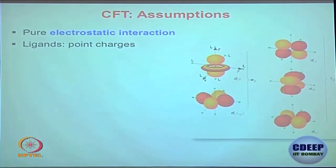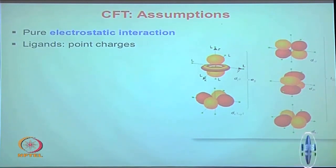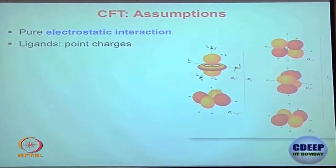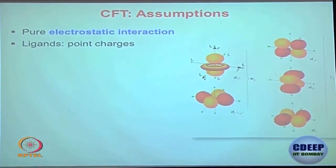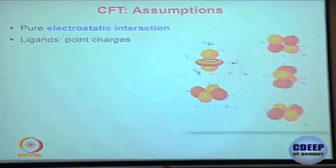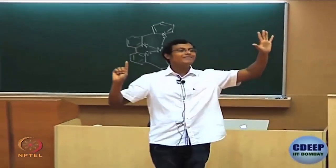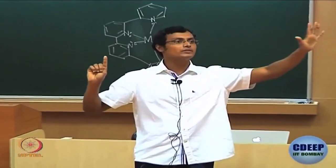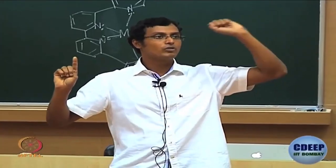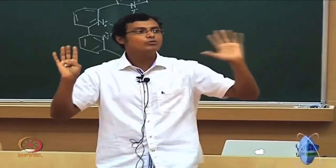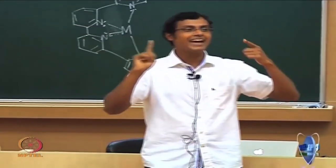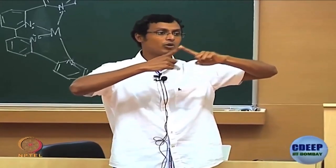Now in crystal field theory, first we have to look at the orbitals. This is something you have to have very clear in your mind — what we are talking about with the atomic orbitals, mainly the 5 d orbitals, where they are and how they are oriented along the axes.